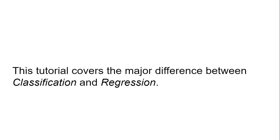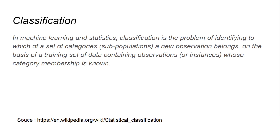Today we will be covering the major difference between classification and regression — two terms you come across all the time. In machine learning and statistics, classification is the problem of identifying to which of a set of categories a new observation belongs, on the basis of a training set of data containing observations whose category membership is known. Definitely quite an intimidating definition for a beginner.